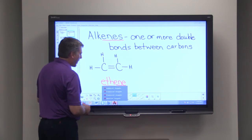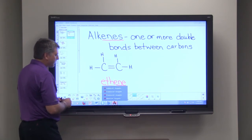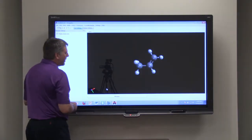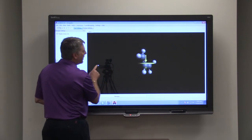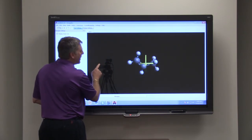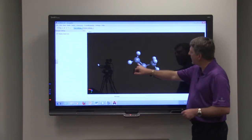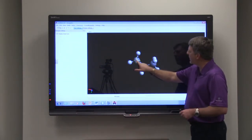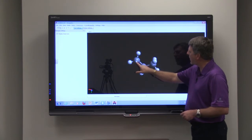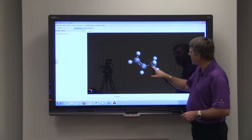Now let's look at some more complicated diagrams. For example, this one is propene. Now I want you to notice something about propene. The first carbon is numbered here, and here's the second carbon, and here's the third carbon.